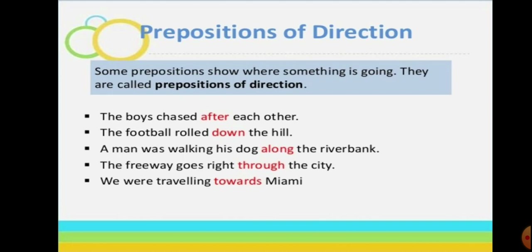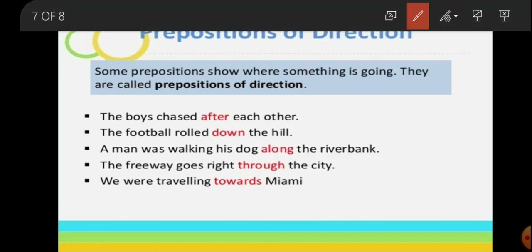Next are prepositions of direction. Some prepositions show where something is going and they are called prepositions of direction. They show the direction in which nouns or pronouns are moving. Examples: 'The boys chased after each other' — showing direction of movement. 'The football rolled down the hill.' 'A man was walking his dog along the river.' These words are used to show prepositions of direction.